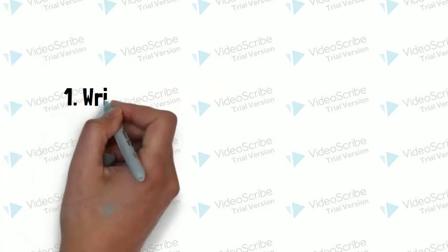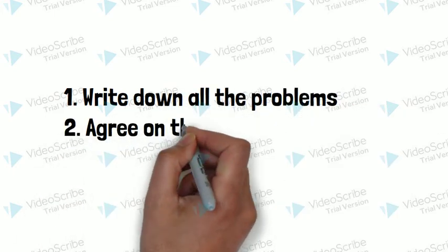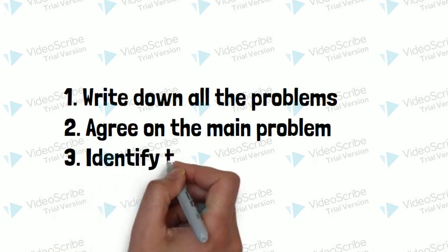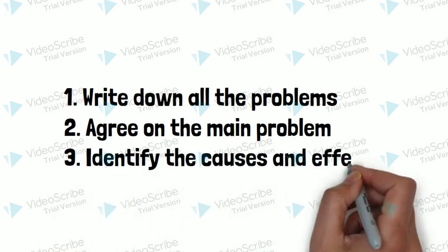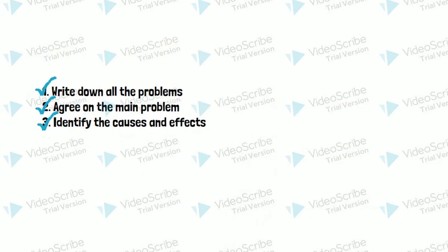Step 1: Write down all the problems. Step 2: Agree on the main problem. Step 3: Identify the causes and effects. If you follow these three steps, you can come up with your own problem tree.